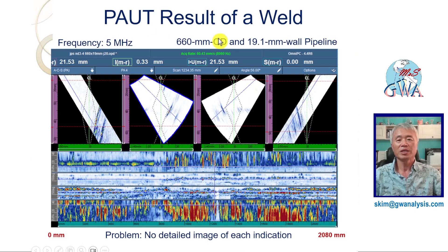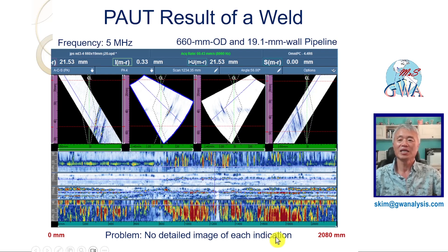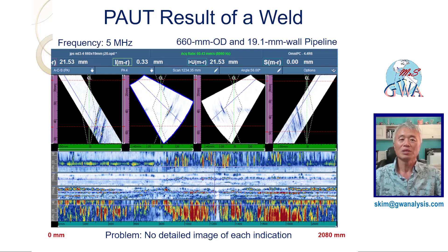This slide shows the PAUT result of a weld of 660mm OD and 19.1mm wall steel pipeline. Total circumferential length is 2080mm. Looking carefully at each location along pipe circumference, we cannot find any defect signal in this plot because of the poor spatial resolution of a 2080mm long x-axis distance. This plot simply proves that the whole pipe circumference was scanned, but it does not prove the proper inspection of the weld because the data do not show detailed UT images of each indication and important region.